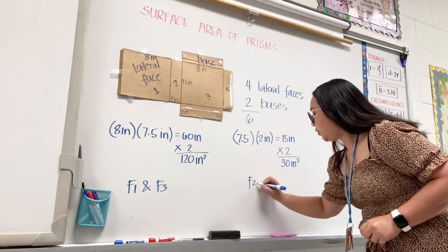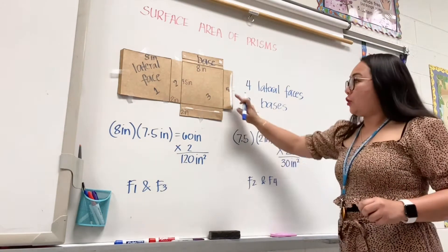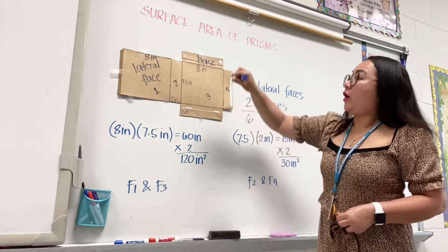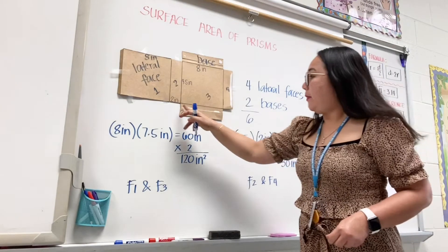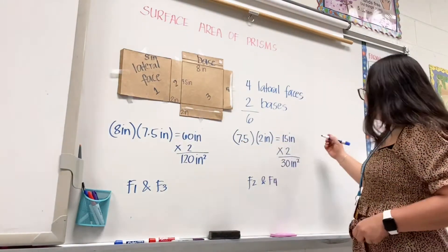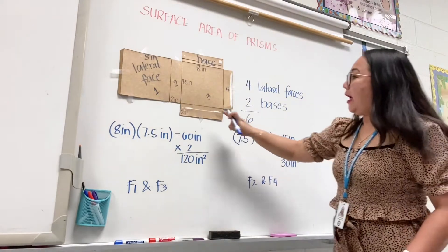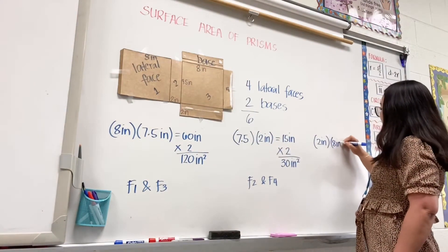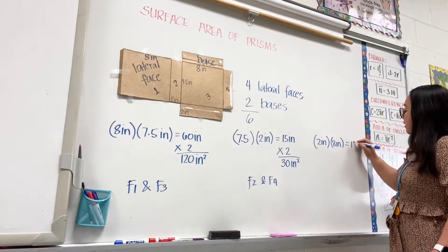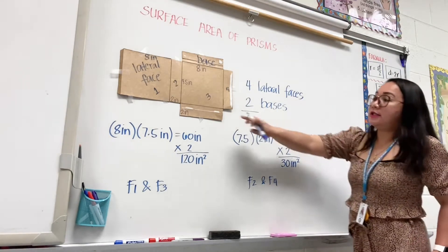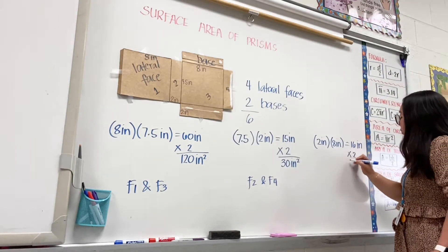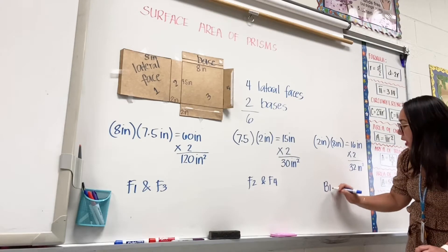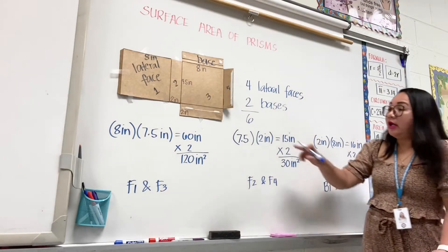We are done with the lateral faces, so we will proceed with the bases. Take note there are also two bases. The measure of this side is two inches, and this side is eight inches. Multiply: two times eight gives sixteen inches squared. Since there are two bases, multiply by two, which gives thirty-two inches squared. This is for base one and base two.